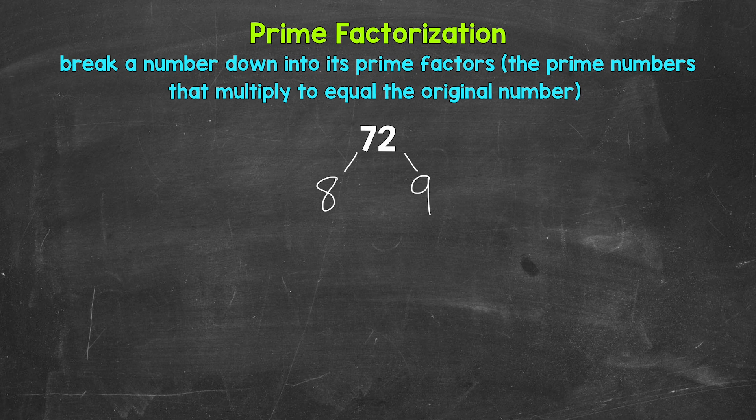Now let's continue breaking this down. We have eight and nine, which are both composite numbers, so we can break both of these down further. Let's start with eight. So we need to think of two factors of eight. Well, two and four, two times four is eight. So let's break eight down into two and four.